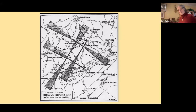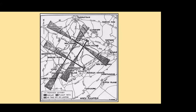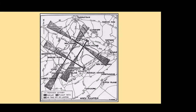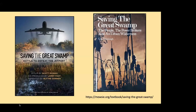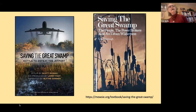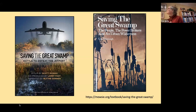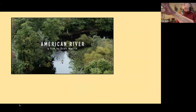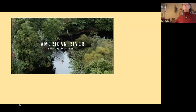That concludes the presentation. For the full story, Scott Morris's film can be found on Amazon to rent for the night, or look for his new film American River on PBS listings or at AmericanRiver.film. Cam Cavanaugh's book Saving the Great Swamp is out of print but may be found in local libraries. Happy to take questions — and note that much research is still ongoing.